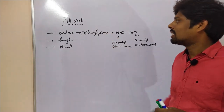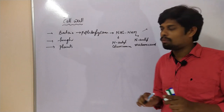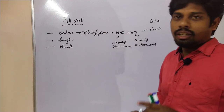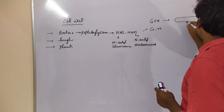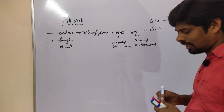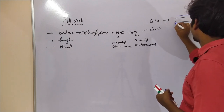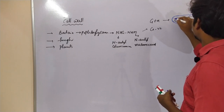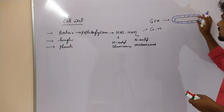Based on the cell wall, bacteria can be divided into two types: gram positive and gram negative. Gram positive bacteria contain a plasma membrane, and above the plasma membrane a thick layer of cell wall is present.